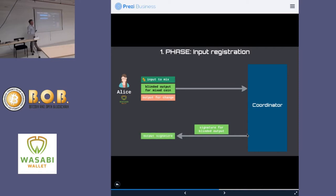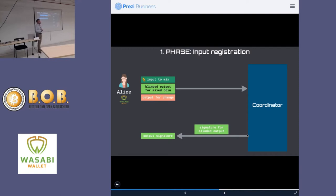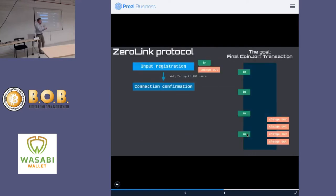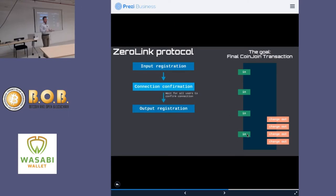When we do a CoinJoin it has a few stages. The first is input registration, which lasts about an hour and a half to two hours as we try to get up to a hundred participants. We had a hundred participants engage in a CoinJoin about two months ago — it was the biggest CoinJoin in the history of Bitcoin. It's kind of like waiting in a gaming lobby waiting for other players to join the server. Once we're ready, we confirm that everyone is online and that the connections are there.